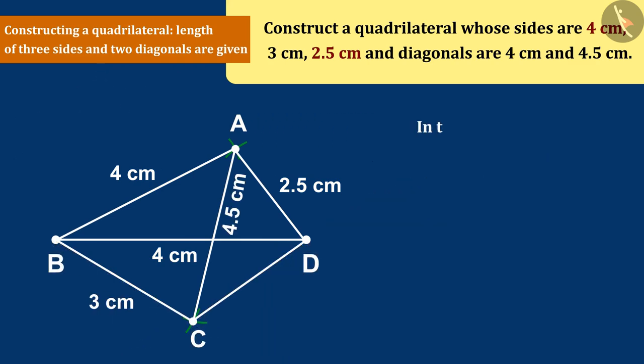Thus Arav gets a desired quadrilateral ABCD in which AB, BC, AD are given sides, and BD and AC are the given diagonals.